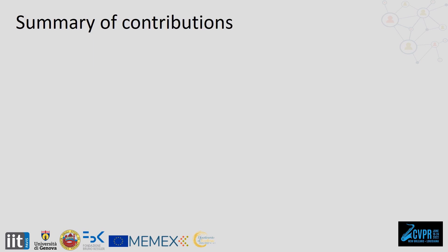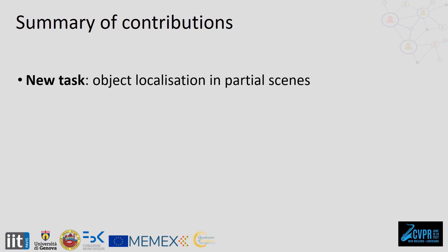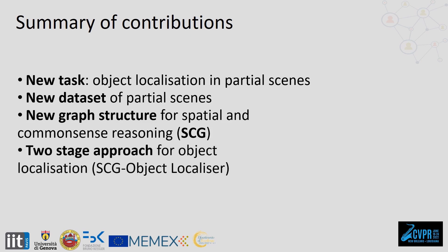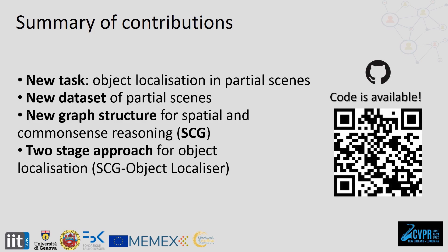To summarize, in this work we presented a novel task that involves locating objects in the unobserved part of the scene, a new dataset of partial scenes, a new graph-based structure that allows for spatial and common sense reasoning, and a two-stage solution for the localization using a graph neural network and a localizer module. In the paper, you can find more ablation studies and more details on the dataset.